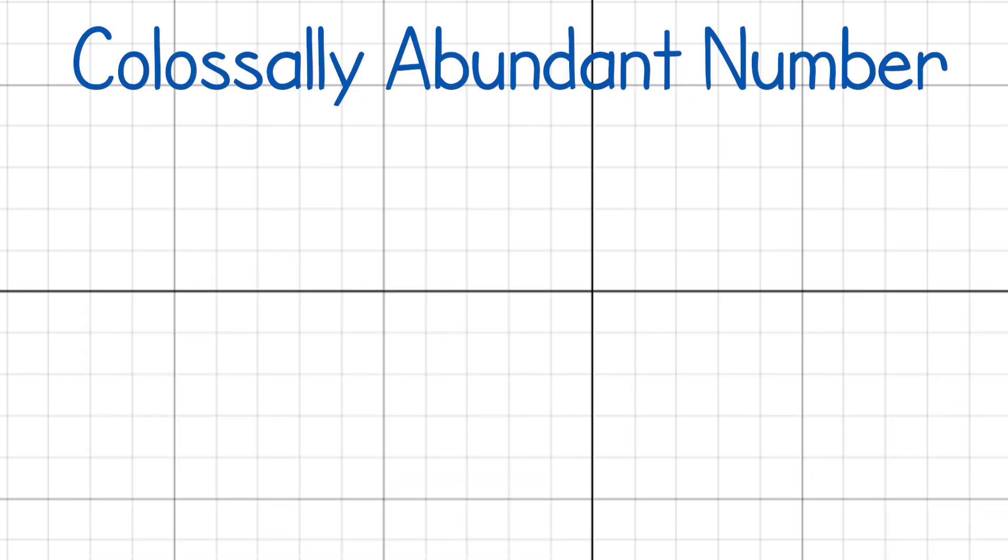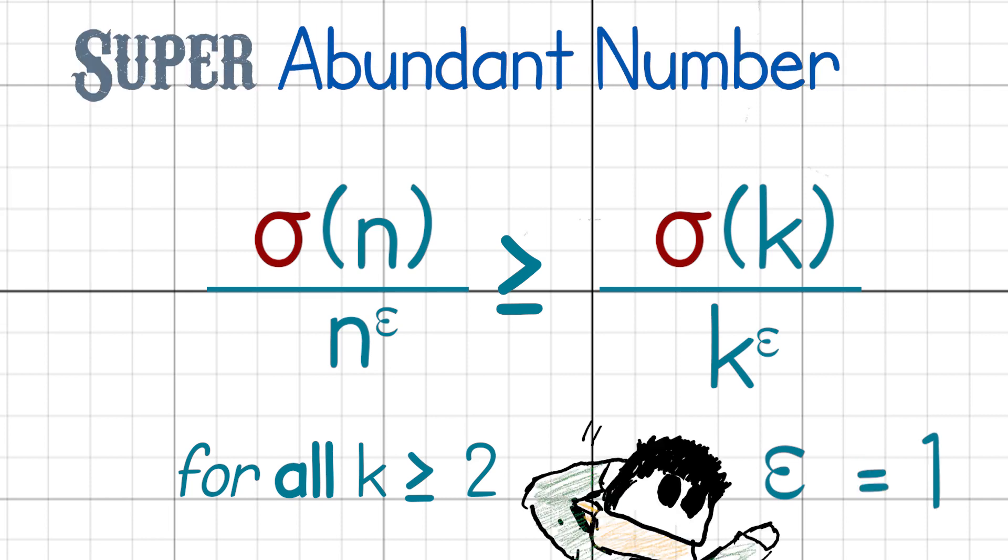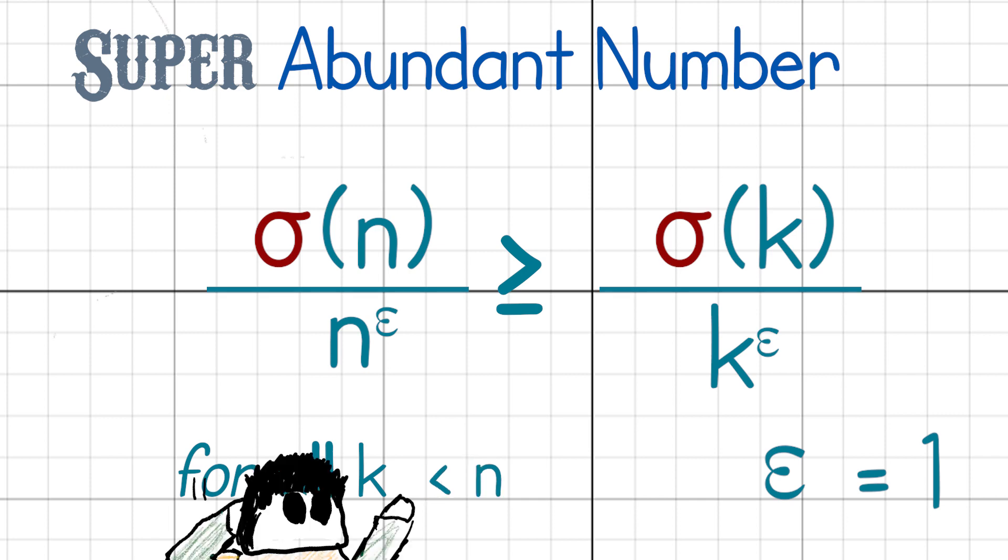Our number n is called colossally abundant if sigma of n over n to the epsilon is greater than sigma of k over k to the epsilon for all natural numbers k at least 2. This is very similar to the one before, but with the caveat that epsilon in this case is strictly greater than 1. Notice how this is a generalization of superabundant numbers, where epsilon was set to exactly 1.